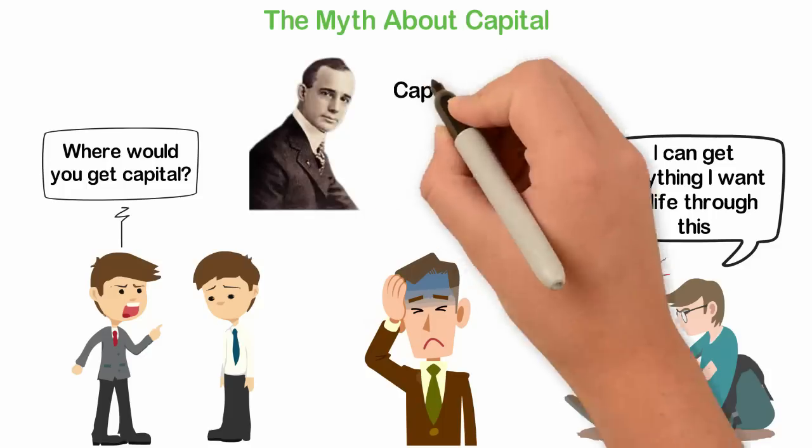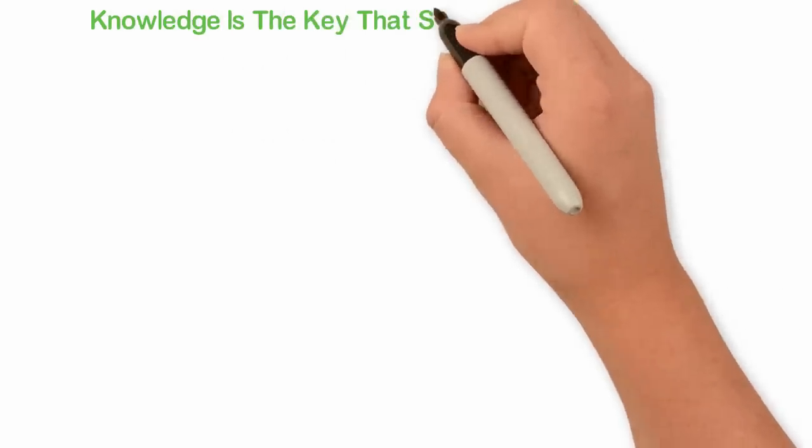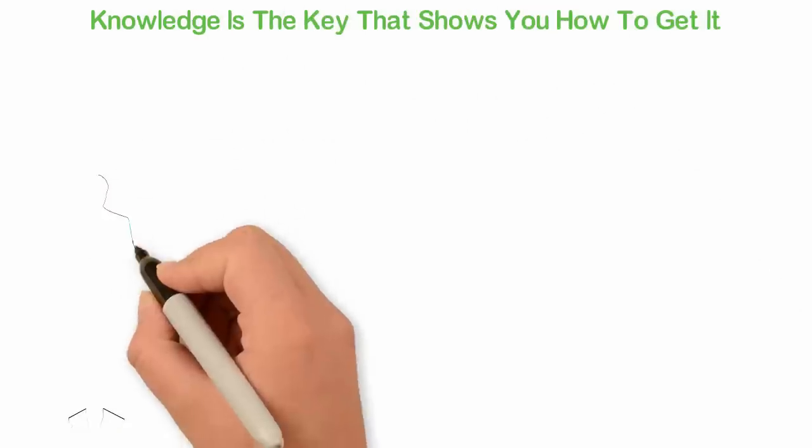Napoleon Hill said and I quote, Capital is too much in the world for those who know how to get it. Knowledge is the key that shows you how to get it. You need to learn every day of your life, study business, negotiation, human psychology, human relationship, and leadership.